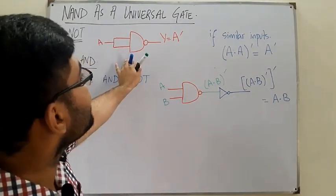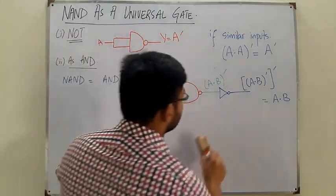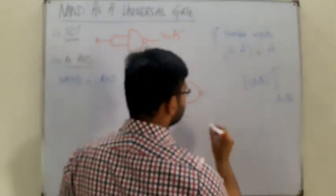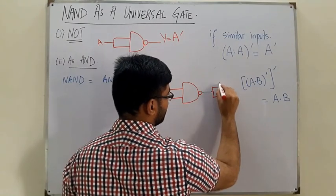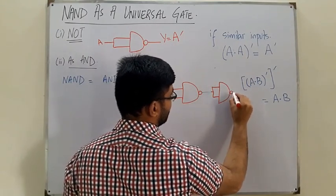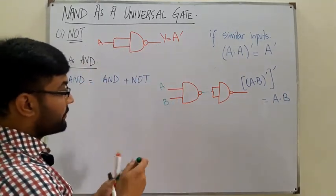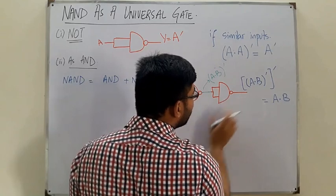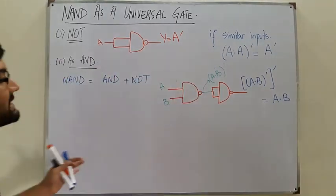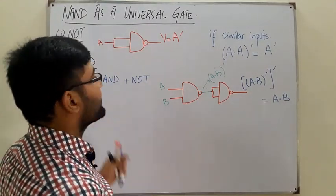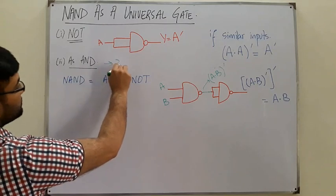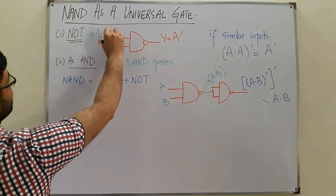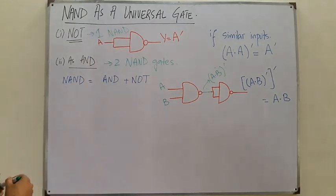We have seen that the NOT gate can be replaced by a single NAND gate with both inputs tied together. So we replace the NOT gate after the NAND gate with another NAND gate (inputs tied). This gives us A AND B at the output. Therefore, to implement an AND gate we require two NAND gates, while for a NAND gate itself we require only a single NAND gate.